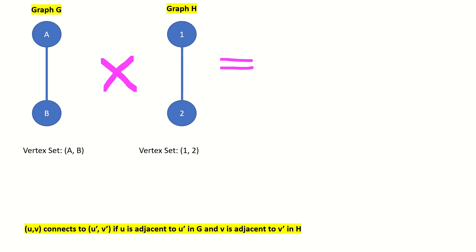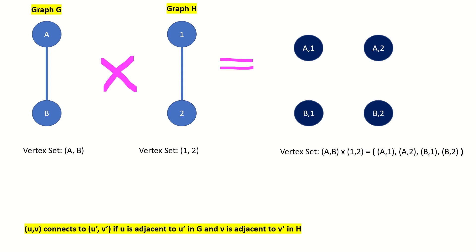First, we need to find the vertex set of the tensor product. That would be the Cartesian product of the vertex sets of the two path graphs, {a, b} and {1, 2}. So our tensor product will have four vertices. Now what about their adjacencies? Let's take it one vertex at a time. For vertex a1, we are looking for a vertex whose left entry is a different vertex adjacent to vertex a in graph G, and whose right entry is a vertex adjacent to vertex 1 in graph H. Looks like b2 is the only vertex that meets these conditions.